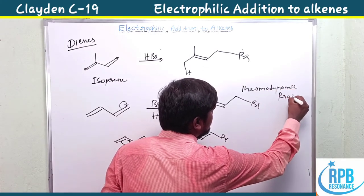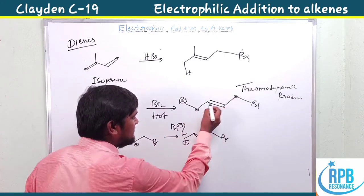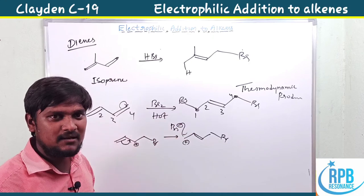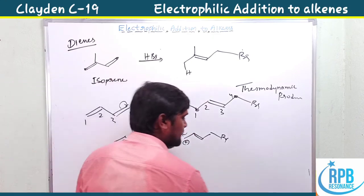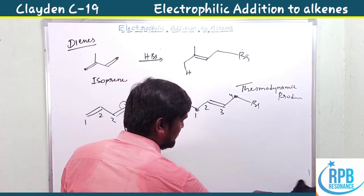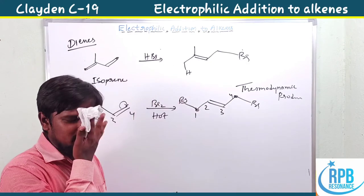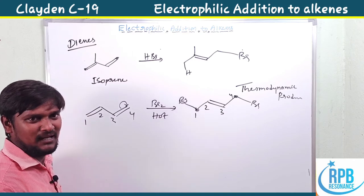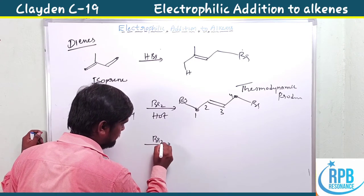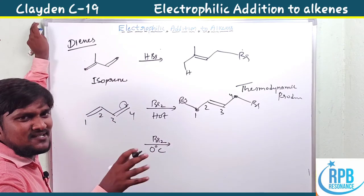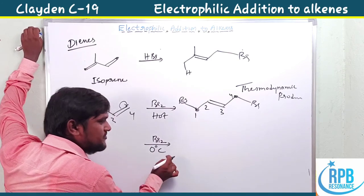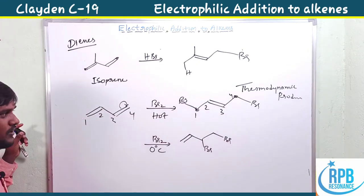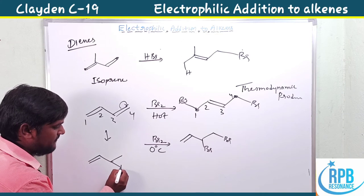Both terminals of the diene — positions 1, 2, 3, and 4 — are involved. One terminal is attacked by the cation and the other by the anion. Under thermodynamic conditions, 1,4-addition gives the thermodynamic product. When we change to zero degrees Celsius, the reaction gives the 1,2-dibromide product — the 1,2-addition product.